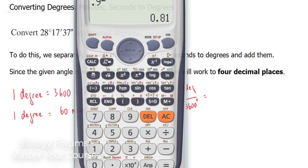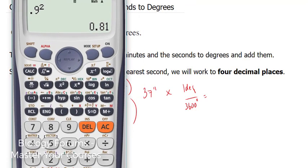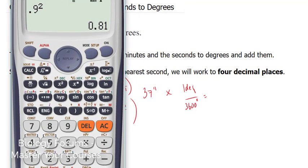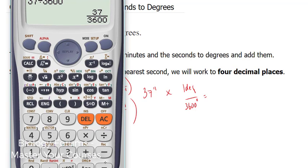If we multiply these out, I'm going to use our calculator here. If we multiply this out, 37 seconds times 1 divided by 3,600. So 37 divided by 3,600 is equal to the following.